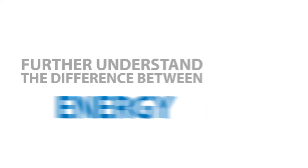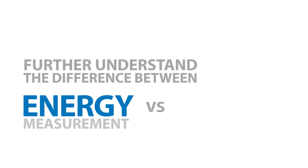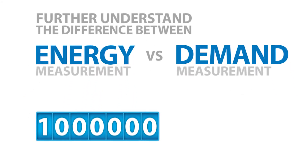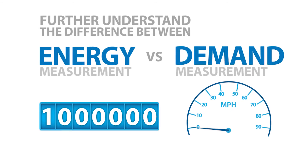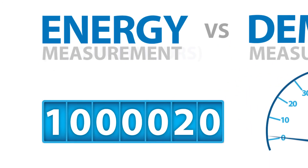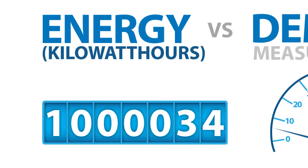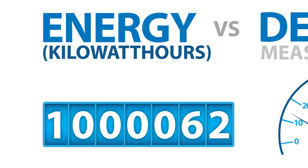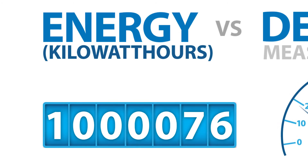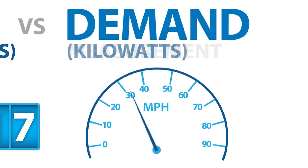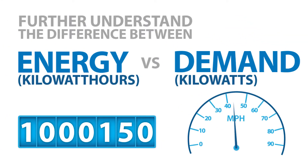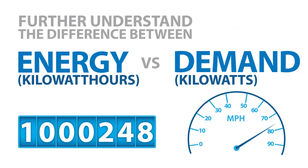To help you further understand the difference between the energy measurement and the demand measurement, consider the analogy of an odometer and a speedometer in a car. The energy measurement — kilowatt hours — can be compared to the number of miles driven, as shown on the odometer. The demand measurement — kilowatts — is like the speed, or rate at which the miles are driven, as shown on the speedometer.